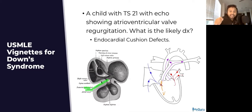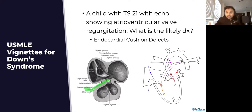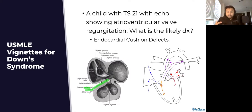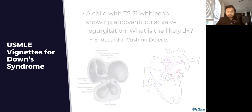It is very important to know that one of the cardiac defects related to Down syndrome is the endocardial cushion defect.